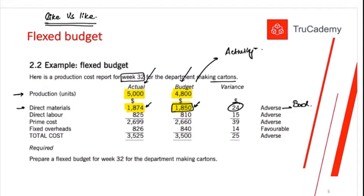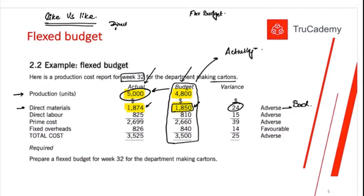The solution is to create a flex budget. We take the actual activity and adjust the fixed budget to reflect it. For direct materials, first get the budget price per unit: $1,850 divided by 4,800 units equals approximately $0.39 per unit. This is the standard or budget price per unit.